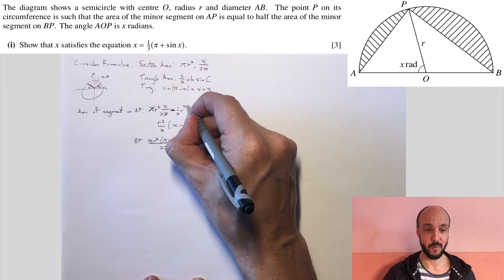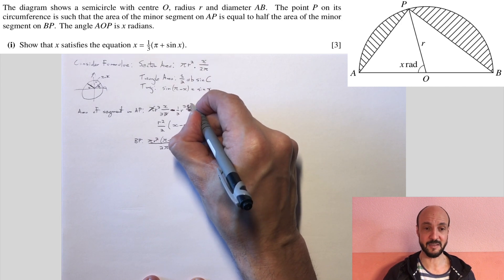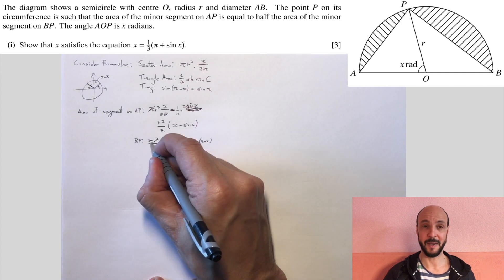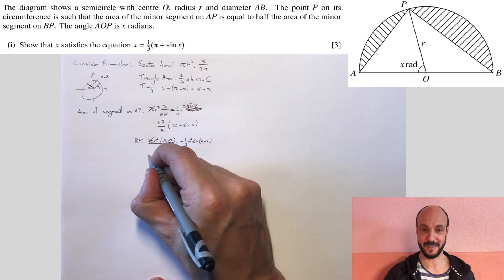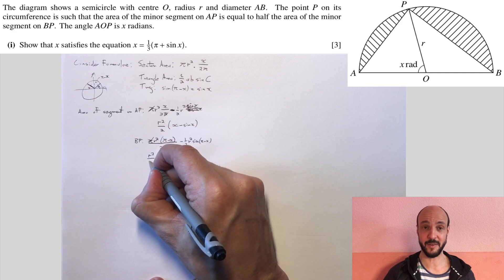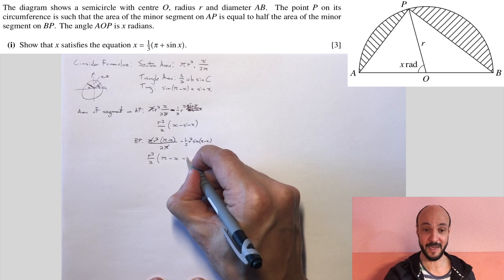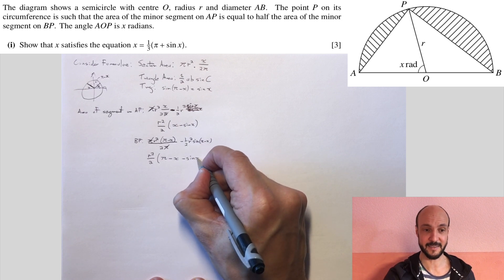And again, if we simplify that, we've got, with the pi's cancel out, r squared times by pi minus x over 2 minus r squared over 2 times by sine x. And again, we can factor out the r squared over 2 to give us r squared over 2 times by pi minus x minus sine x.